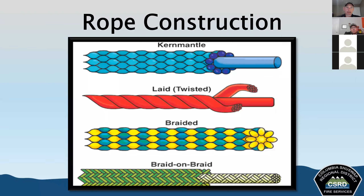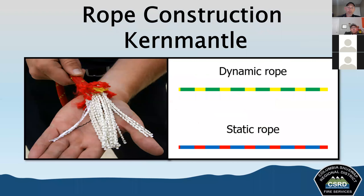With rope construction, there are four different types shown on screen. Common types used for life safety include kernmantle rope. For utility, we're looking at laid, braided, or braid-on-braid. Kernmantle rope is constructed of a synthetic jacket — a braided covering or sheath over the core, which is the main load-bearing strand. The core runs parallel with the length and works in conjunction with the covering to increase stretch resistance and load characteristics.